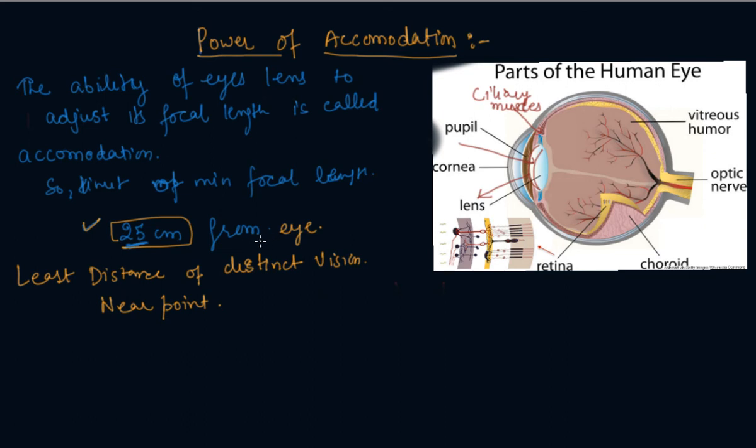For a young adult with normal vision, the near point is about 25 cm. And what is the far point, students? The far point is the farthest point at which the eye can see, and it is infinity for a normal eye. So the vision of the eye will lie between 25 cm to infinity.